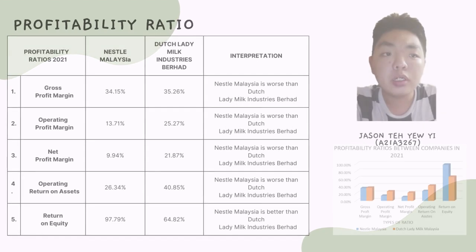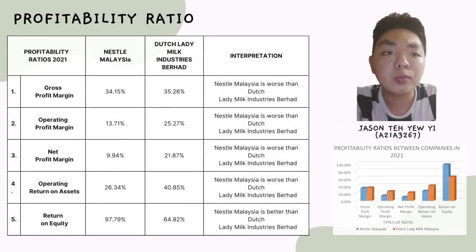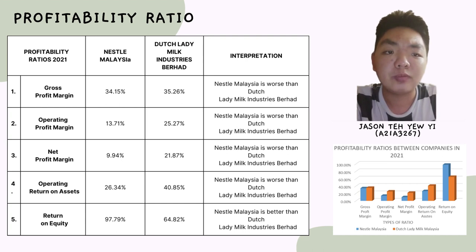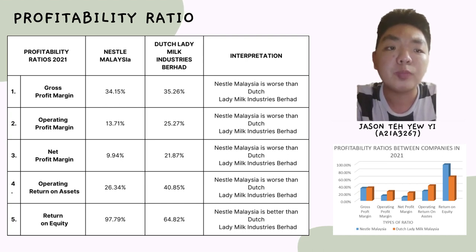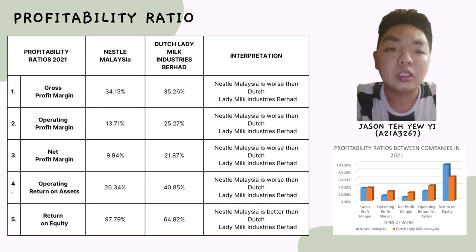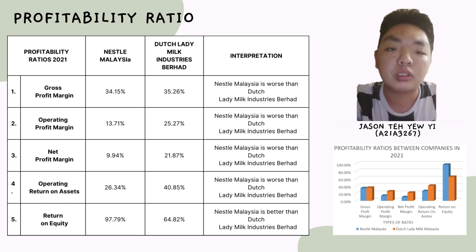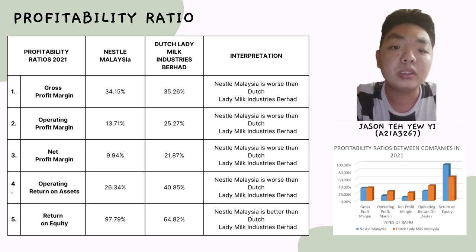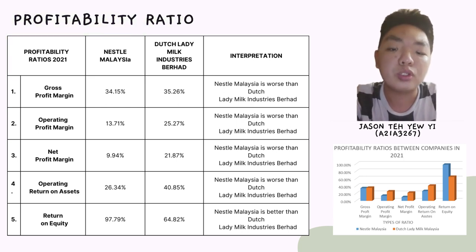In the comparison of profitability ratios, Dutch Lady outperforms Nestlé in key metrics with a higher gross profit margin of 35.36% versus 34.50%, and a superior operating profit margin of 25.37% versus 13.71%, while Nestlé recorded a net profit margin of 9.94%. Moreover, Dutch Lady's operating return on assets is 40.85% compared to Nestlé's 26.34%. However, Nestlé leads in return on equity with 97.79% versus Dutch Lady's 64.82%. Overall, Dutch Lady performs exceptionally well in profitability ratios in 2021 compared to Nestlé.